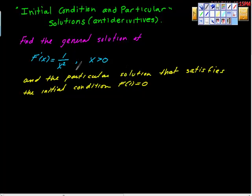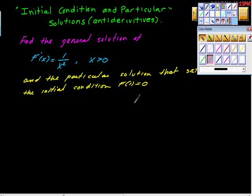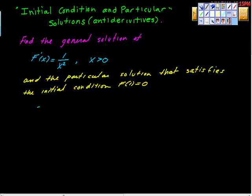Given an antiderivative, it says find the general solution, and of course this is going to come out equal to f(x) plus C. Then it asks us for the particular solution that satisfies the initial condition that f(1) = 0, and that gives us some other work to do. Let's do the first part first — f(x) is going to be the antiderivative of 1 over x² dx.